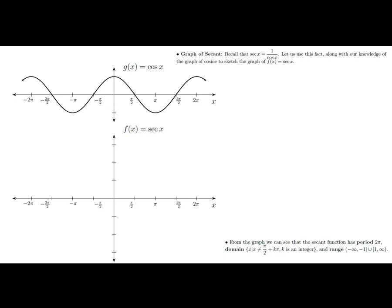So we're going to start off with the secant of x. Remember, the secant is 1 divided by the cosine. You can see we have a variable in the denominator of our fraction. Any time we have a variable in the denominator, we should be asking ourselves: are there times when this cosine of x could be 0? Because we know that if we take 1 over 0, that is undefined. So anything that makes the denominator 0 should not be allowed into the domain of our function.